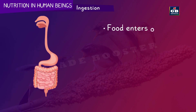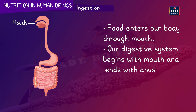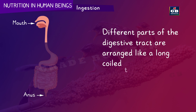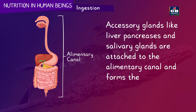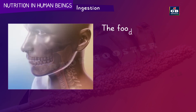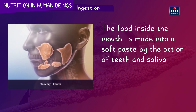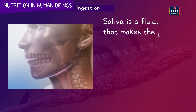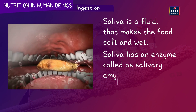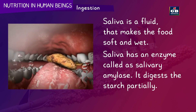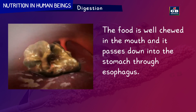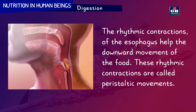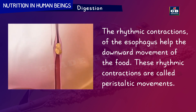Nutrition in human beings: Food enters our body through the mouth. Our digestive system begins with the mouth and ends with the anus. Different parts of the digestive tract are arranged like a long coiled tube called the alimentary canal. Accessory glands like the liver, pancreas and salivary glands are attached to the alimentary canal and form the digestive system. The food inside the mouth is made into a soft paste by the action of teeth and saliva. Saliva has an enzyme called salivary amylase which digests starch partially. The food passes down into the stomach through the esophagus via rhythmic contractions called peristaltic movements.